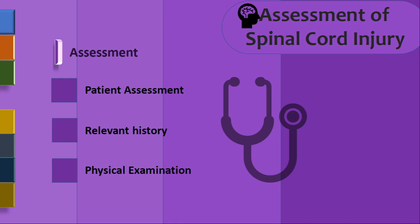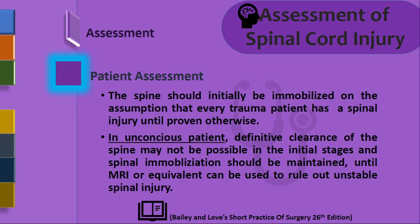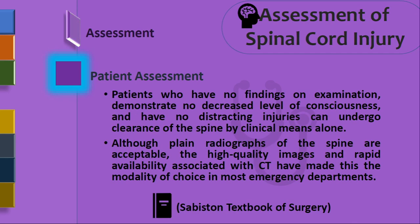For patient assessment, we must take relevant history and perform physical examination. The spine should be initially immobilized on the assumption that any traumatized patient has a spinal injury until proven through radiological investigation. If the patient is unconscious, definitive clearance may not be possible initially — MRI, CT scan, or equivalent investigation must rule out unstable injuries. Patients with no findings on examination, normal consciousness, and no distracting injuries can undergo clearance by clinical means alone. CT scan is the modality of choice in emergency departments.